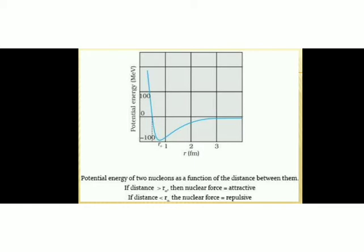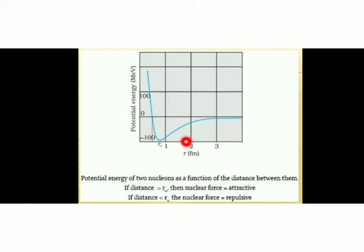For distance less than r₀, the potential energy graph is along the positive axis. Whenever the energy is positive, the force responsible is repulsive. So: if distance is greater than r₀, nuclear force is attractive; if distance is less than r₀, nuclear force is repulsive.